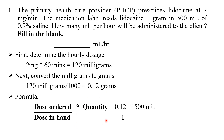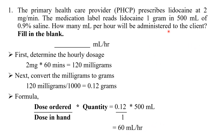Using the formula — dose ordered divided by dose in hand multiplied by quantity — we get: 0.12 ÷ 1 × 500 = 60 mL per hour. So the answer is 60 mL per hour will be administered to the client.